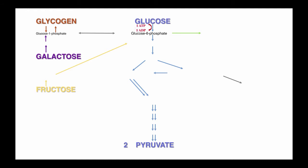Glycogen already has the phosphate because all glycogen molecules within the body originally came from being a glucose molecule from the diet and were stored because they weren't used. So glycogen will always have that phosphate and therefore not need that first conversion that glucose does. Once these molecules have become glucose 6-phosphate, they turn into fructose 6-phosphate, which just means the glucose changes its shape.